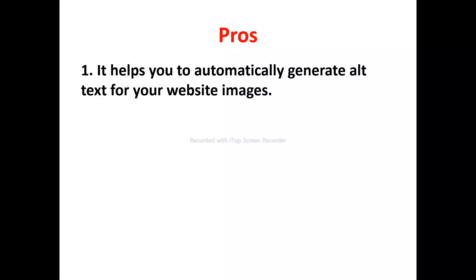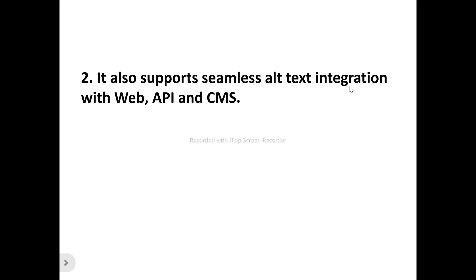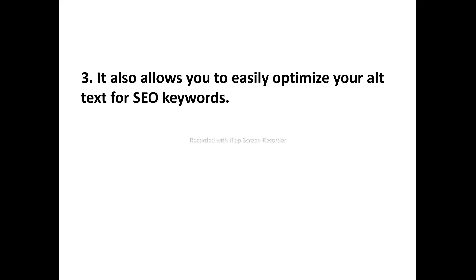Number two, it supports seamless integration with web API and CMS. Alt Text AI supports seamless alt text integration with your web, your API, and your CMS app, allowing you to improve the accessibility and SEO-friendly links on your website effortlessly. It helps generate alt text for every image, eliminating the need for manual processing. With flexible integration, you can incorporate Alt Text AI into your existing workflow using plugins for WordPress, Shopify, and other platforms.